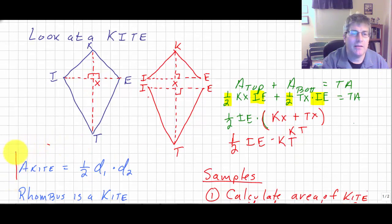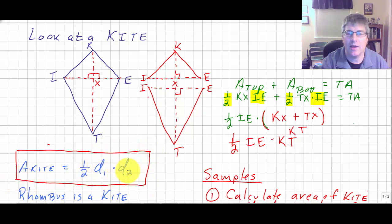The area of a kite is one-half d1, the diagonal, one diagonal times the other diagonal. So one-half of diagonal IE times diagonal KT is the area of our kite—one-half d1 times d2. That is the formula for the area of a kite. You can add that to your list.